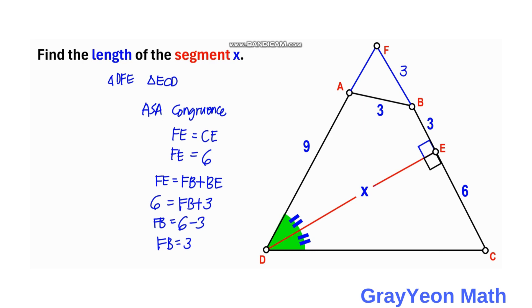Next, we focus on the angles at point D. There are two congruent angles, so we label each as alpha. Since alpha forms one of the angles of triangle ECD, the complementary angle at C must be beta, so alpha plus beta equals 90 degrees. Because the two triangles are congruent, the angle at F is also beta.